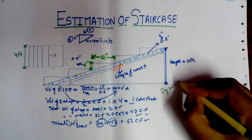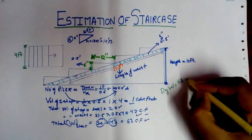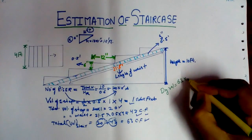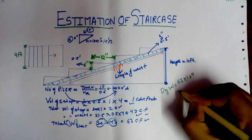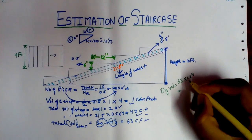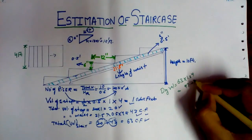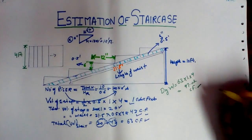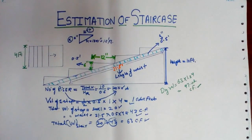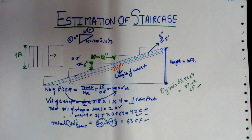Now we will calculate the dry volume. The dry volume equals the total volume of the staircase multiplied by the factor 1.54, which gives 97.02 cubic feet.